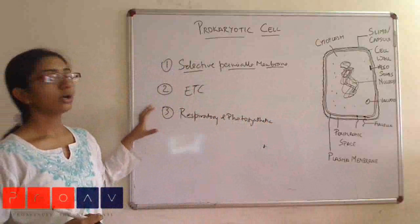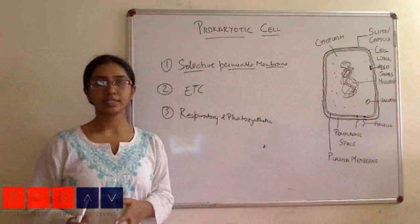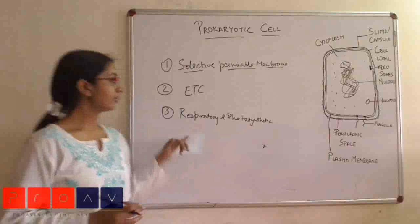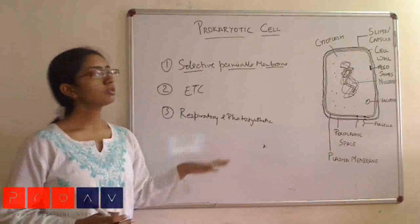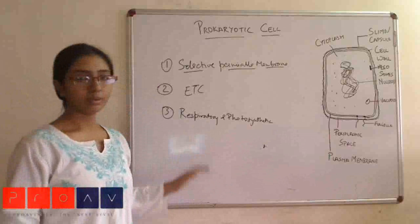Basically all these organelle functions that are present in eukaryotic cells which are provided by the chloroplast and mitochondria are provided by the plasma membrane itself in prokaryotes. Yes, ribosomes are present inside a prokaryotic cell. This is all about the plasma membrane.